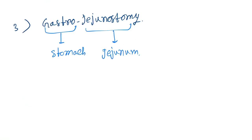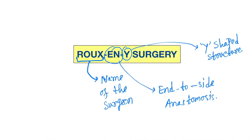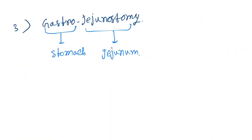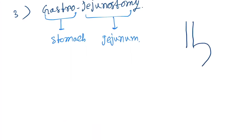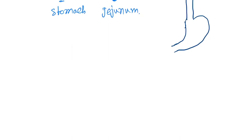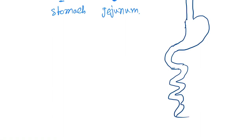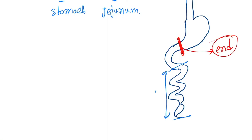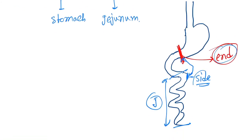Now let's understand why we call this end-to-side anastomosis. In gastrojejunostomy, let's say this is the stomach and this is the duodenum, then we have the jejunum. We cut here at the stomach — that forms the 'end'. In the jejunum, we cut at the side, not the end. Then we anastomose these together, which is why we call it end-to-side anastomosis.